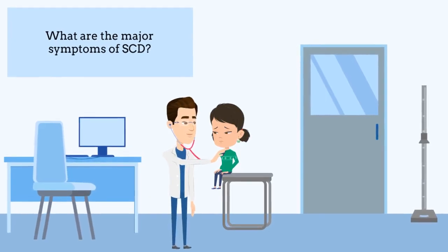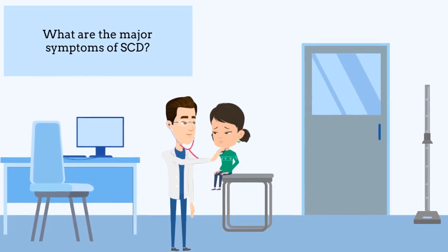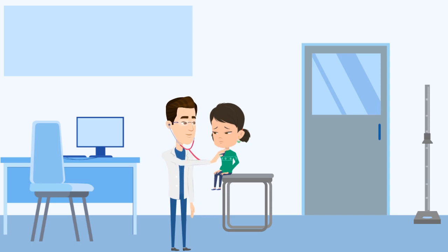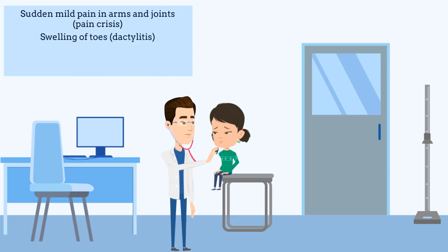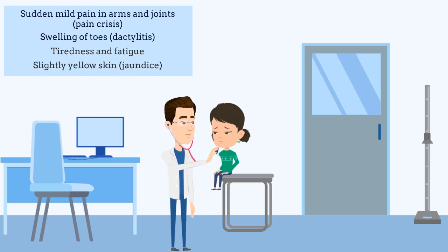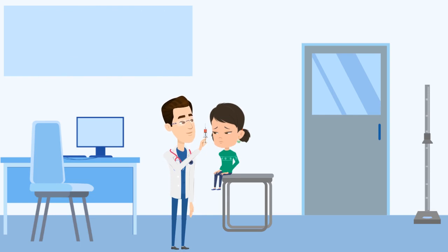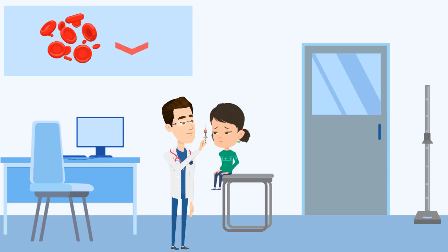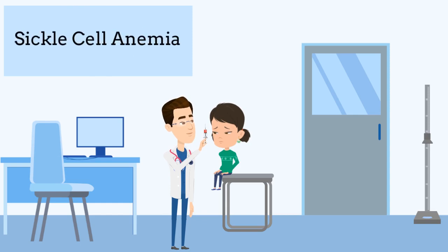What are the major symptoms of sickle cell disease? Here's a scenario: a five-year-old girl was rushed to the hospital because she started exhibiting the following symptoms — sudden mild pain in her arm and joints, known as pain crisis, and swelling of the toes, also called dactylitis; increasing tiredness and fatigue, which started occurring two days prior; and her skin was also turning slightly yellow, indicating jaundice. The physician conducted a blood test, found low levels of red blood cells, and based on this and the symptoms presented, the patient was diagnosed with sickle cell anemia.